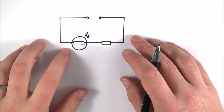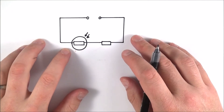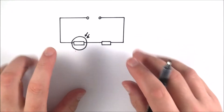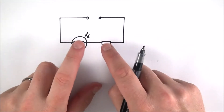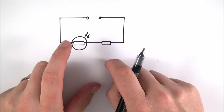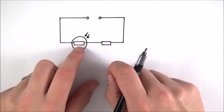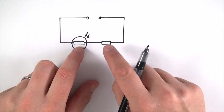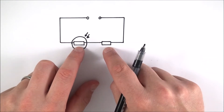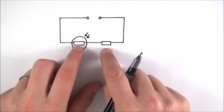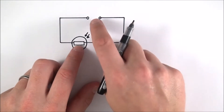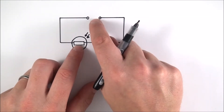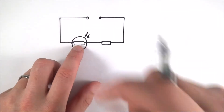This is a very simple potential divider circuit. What we have are two resistors — in this case an LDR and a fixed resistor — and what they do is share the potential difference of a power supply.